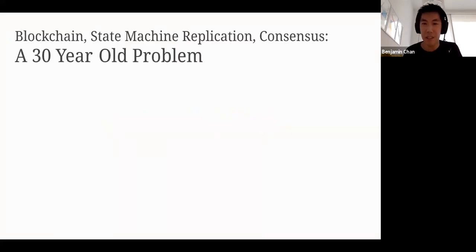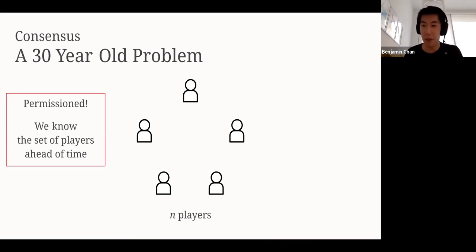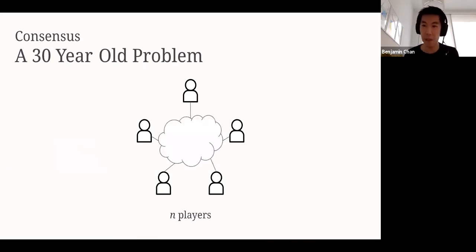Blockchain, state machine replication, consensus, they're all kind of the same problem. It's been a problem for the last 30 years. The problem setup is the following. We have N players. We know the set of players ahead of time. They're all talking over an unreliable network, such as the internet. A fraction of them, let's say a third, are going to be malicious or Byzantine. These bad guys are going to lie about their protocol states and their goal is to subvert the protocol. They want to prevent the honest players from reaching agreements.